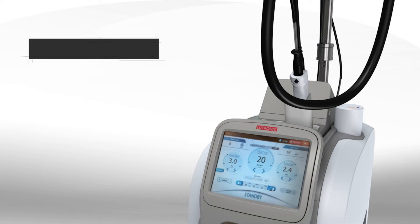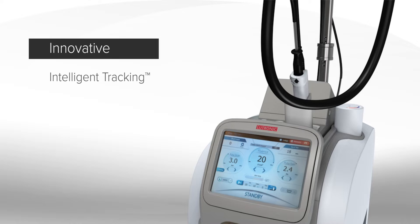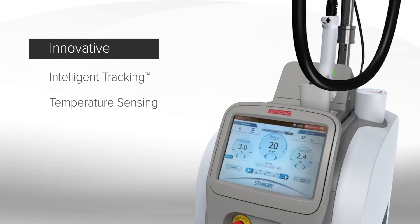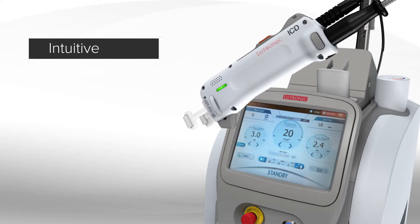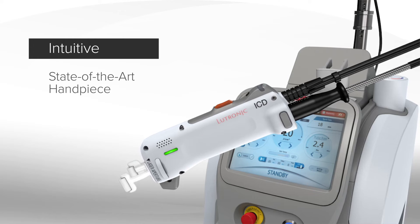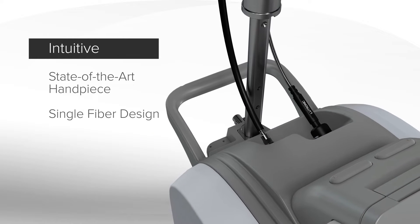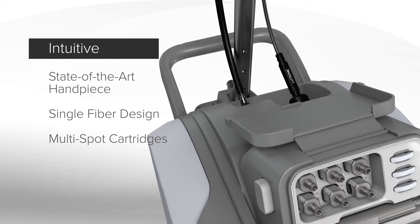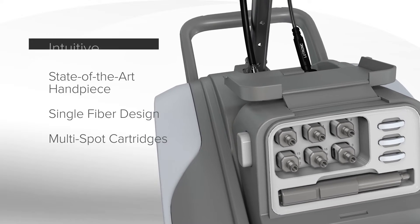Clarity 2 is innovative with its unique intelligent tracking and temperature sensing capability. It's intuitive, with a state-of-the-art handpiece and single-fiber design, supporting smart multi-spot cartridges ranging from 2 to 25 millimeters.